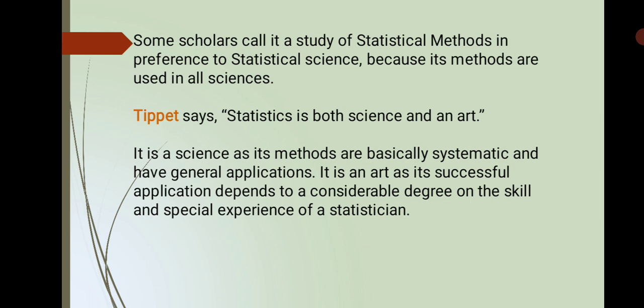कुछ authors ने बोला है कि statistics science है, कुछ ने बोला है यह art है। But Tippett says statistics is both science and an art. It is a science as its methods are basically systematic and have general applications. Science की features यही होती हैं — systematic manner में हो, plus universal application होना चाहिए। Statistics में ये features satisfy होती हैं। And it is an art as its successful application depends to a considerable degree on the skill and special experience of a statistician.